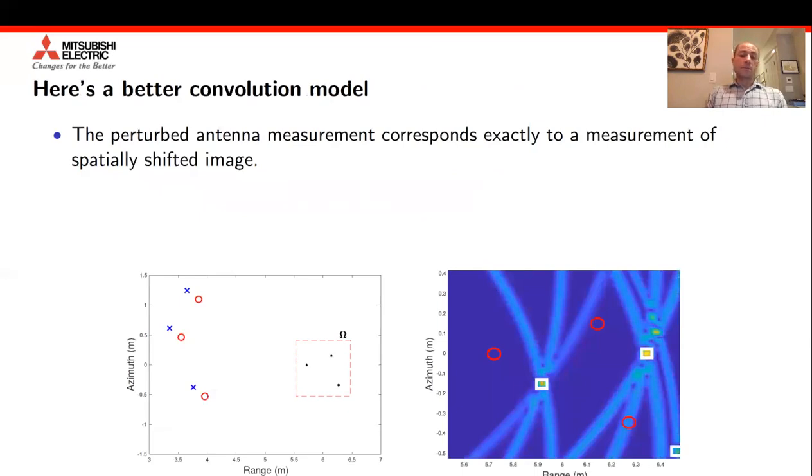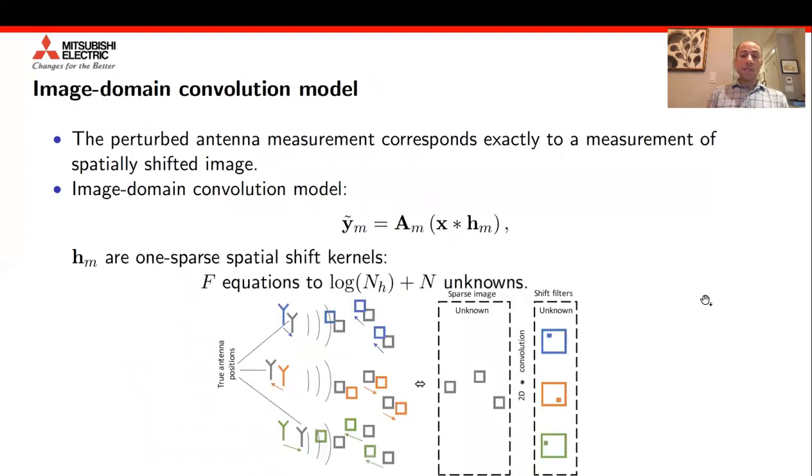A couple of years ago, we had come up with a slightly different radar autofocus model which shifts the estimation of the error from the measurement domain to the image domain. That model indicates that the inaccuracy in the antenna position can be mapped as a shift operator, a spatial shift operator that affects the radar image itself. If we consider a set of three antennas which have different perturbations, we can model the measurements that are observed by these antennas as a single sparse image. We have a sparse image that is convolved with individual shift kernels that correspond to each of the antennas that are observing the image.